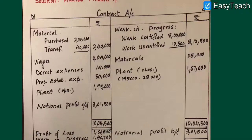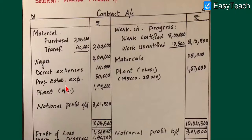This is the contract account. On the debit side, material directly purchased is 2 lakh 40,000. Wages is 2 lakh 40,000. Direct expense incurred is 14,000. Establishment expenses is 50,000. Then we have plant — we will record the opening value and closing value of the plant to account for depreciation.